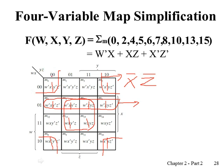For the second row group: Y and Z change horizontally, but W and X do not change between those four cells. W does not change and its value is zero, so we have W̄ (not W). X does not change and its value is one, so we use X in true form. The expression for this group is W̄X.